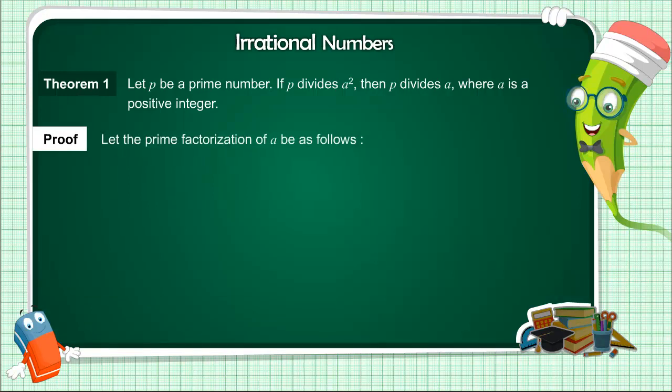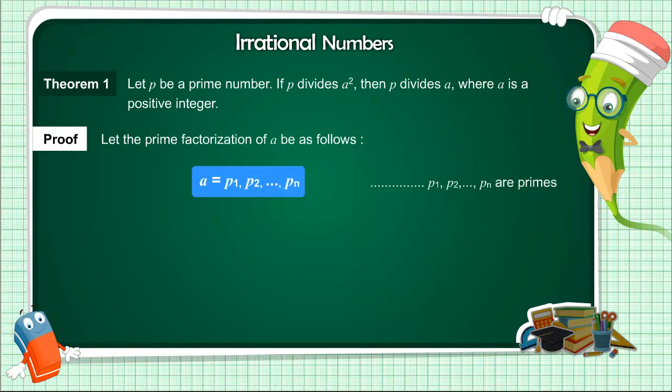Proof: Let the prime factorization of A be as follows. A equals P1 · P2 · ... · Pn, where P1, P2, ..., Pn are primes, not necessarily distinct.